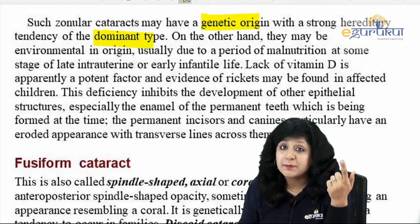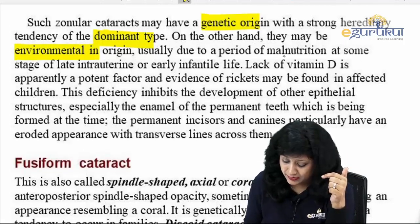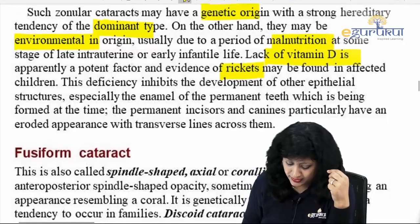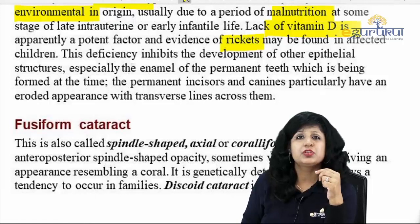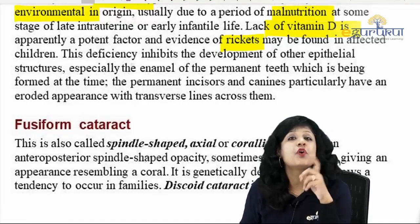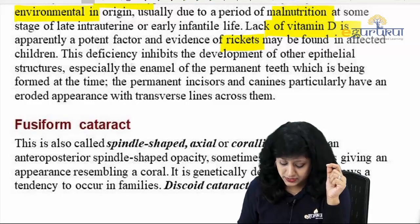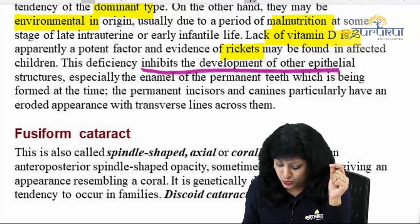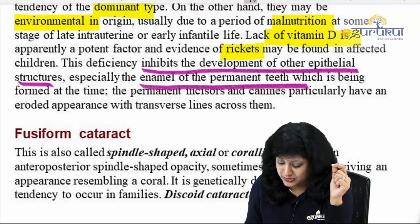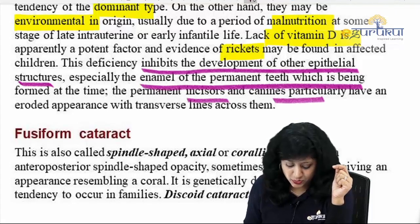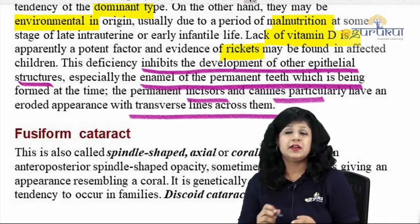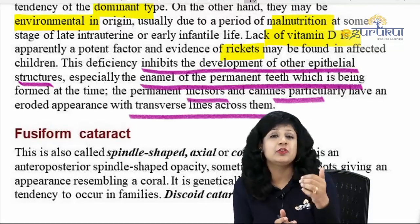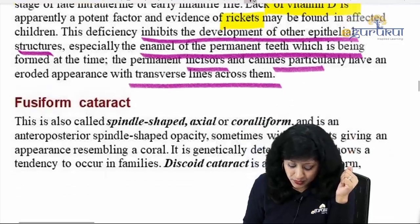Zonular cataracts may have a genetic origin — autosomal dominant. On the other hand they may be environmental: malnutrition, lack of vitamin D, rickets, or maternal rubella as a very strong risk factor. Deficiency of vitamin D also inhibits development of other epithelial structures — especially enamel of permanent teeth: the permanent incisors and canines also have an eroded appearance. So they may give evidence of rickets when asking about developmental/zonular cataract.